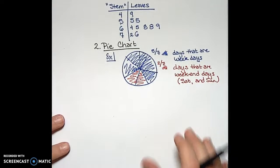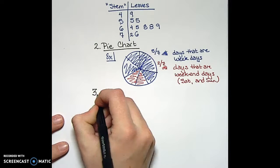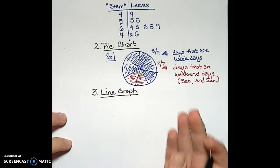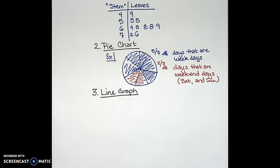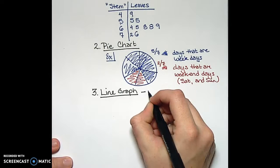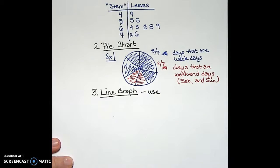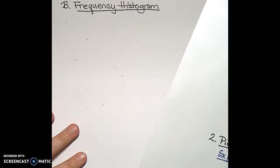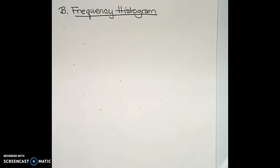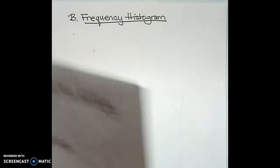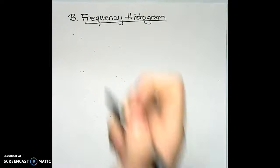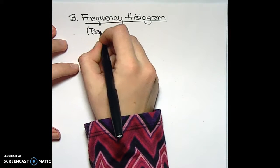A third type of basic visualization is what's called a line graph. Keep in mind that line graphs are useful in some situations and for some data sets and not as useful for others. Line graphs are useful when you want to track something over time. The fourth visualization we will talk about is called a frequency histogram, which you've probably seen before and may have called by a different name — sometimes they go by the name bar chart.